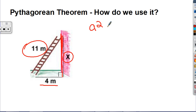I'm going to use the Pythagorean Theorem: a squared plus b squared equals c squared, because I know that this is a right angle.